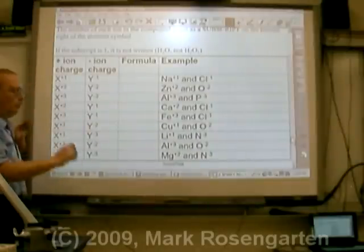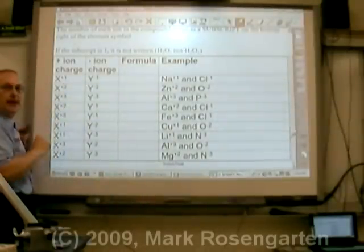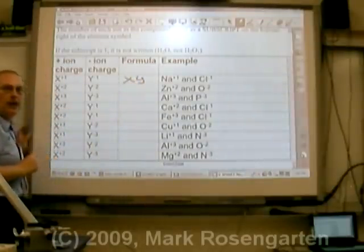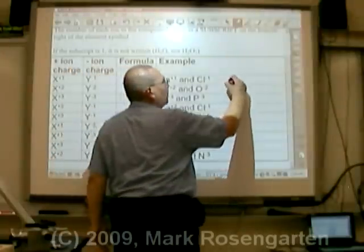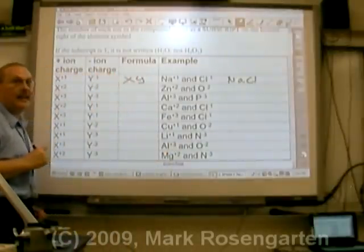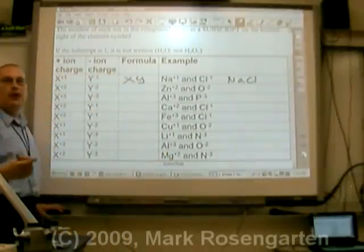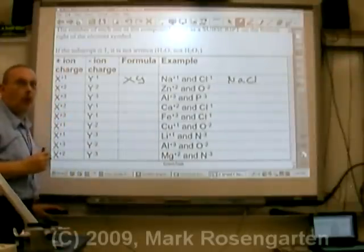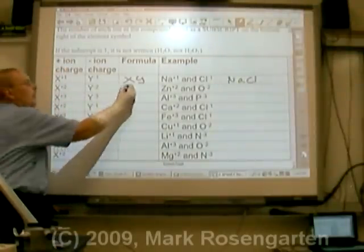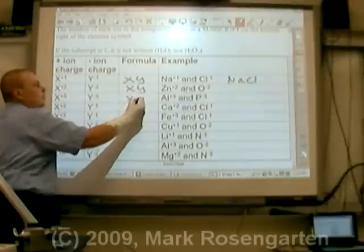For example, if the charges are plus one and minus one, they will simply cancel out one to one. For example, when sodium and chloride come together, you get a formula like that, NaCl. They cancel out one to one. Plus one and minus one add up to zero already. The same thing. If they're the same size charge, they're going to cancel out one to one.